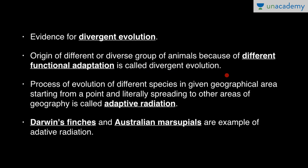The process of evolution of different species in a given geographical area, starting from a point and spreading to other areas of geography or habitat, is called adaptive radiation. Species in a given geographical area radiate to other geographical areas or habitats, where they show functional adaptation according to the habitat and evolution occurs. Divergent evolution is because of adaptive radiation.